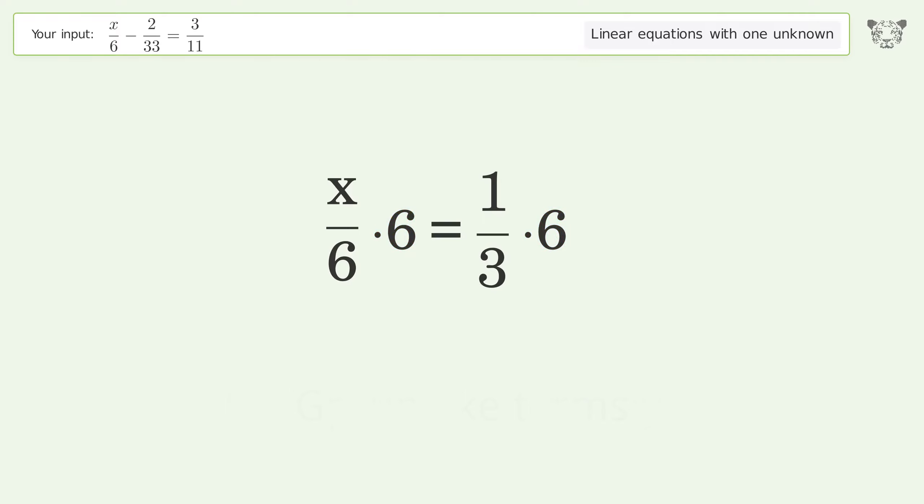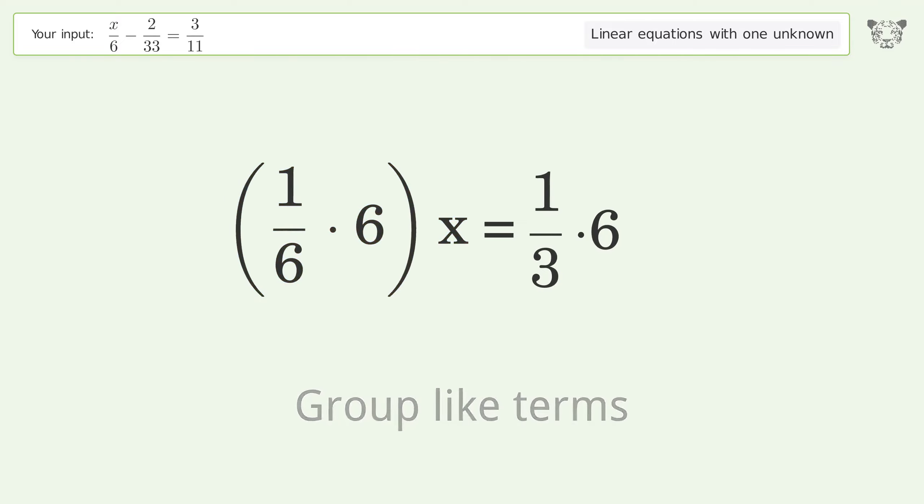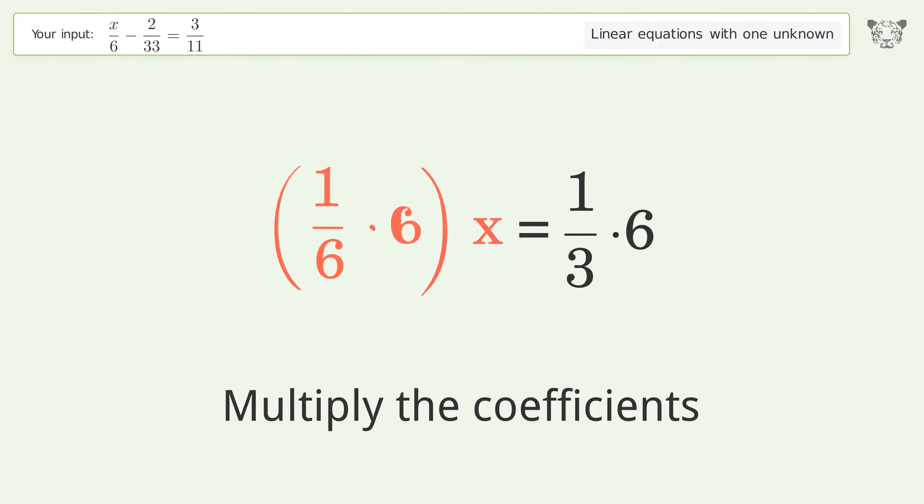Isolate the x. Multiply both sides by 6. Group like terms.